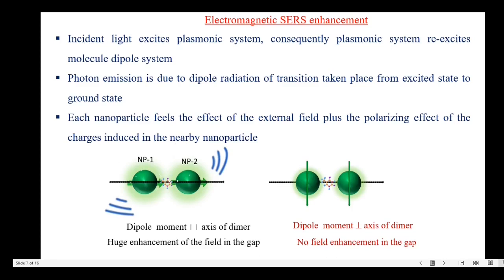Surface enhanced Raman spectroscopy enhancement is based on two effects: one is the chemical effect and another is the electromagnetic effect. Let us see the electromagnetic effect for SERS enhancement. Consider a dimer and the analyte placed between the nanoparticles, that is in the nano gap. The incident light excites the plasmonic system. Consequently, the plasmonic system re-excites the dipole of the molecule, and the oscillating dipole emits radiation — the photoemission is due to dipole radiation of a transition from the excited state to the ground state. When the dipole moment is parallel to the axis of the dimer, there is a huge enhancement of the electromagnetic field in the gap. When the dipole moment is perpendicular to the axis of the dimer, there is no field enhancement in the gap.